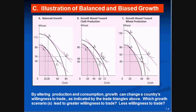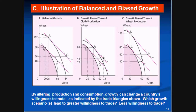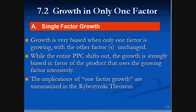Which growth scenario leads to the greatest willingness to trade? The bias growth towards wheat went from 40 to 70 units traded. Balanced growth went from 40 to 56. Bias growth towards cloth went from 40 to 32. So bias growth towards the wheat industry results in the highest willingness to trade, while bias growth towards cloth results in the least willingness to trade. Next, we'll analyze growth in only one factor.